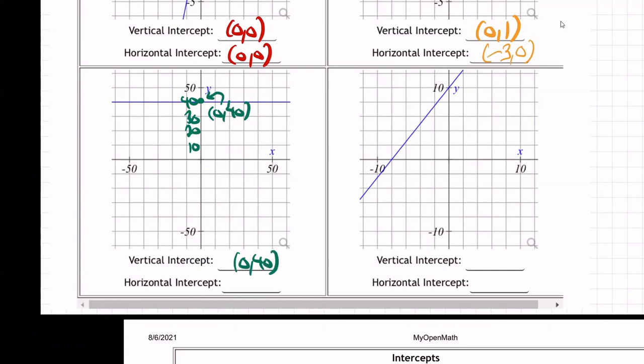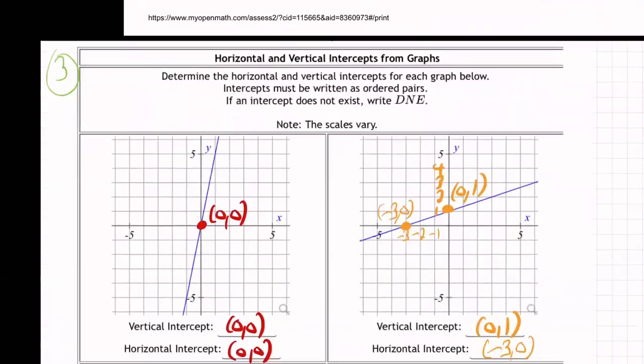Now, where does it hit the horizontal axis, the x-axis, the horizontal intercept? It doesn't. It does not hit it, does it? So what are we going to do about that? Well, what do they want us to type in? Do they want us to type in DNE or something like that? Let me see. I'm going to go to the homework system real quick here. Yeah, that's what it says. Type in DNE.